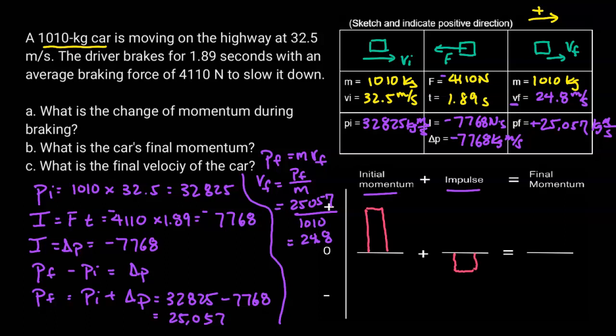If we combine those bars, we get about 25,057 for the final momentum. It's qualitative, but I want you to see how this works: the initial momentum plus the impulse gives you the final momentum.